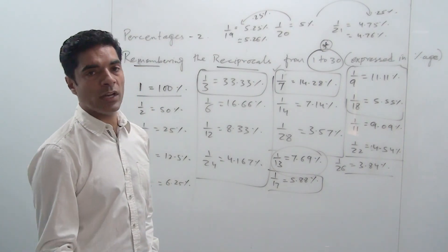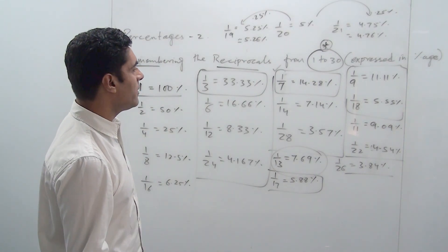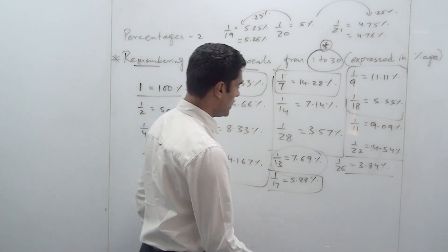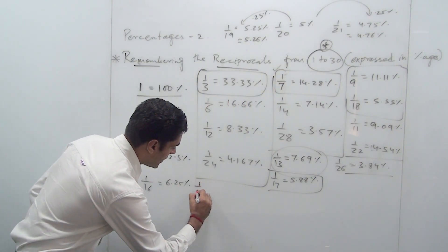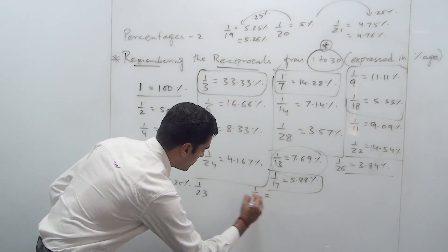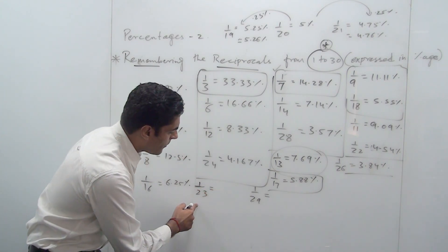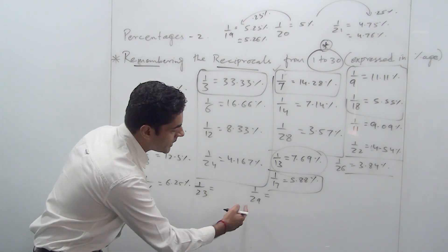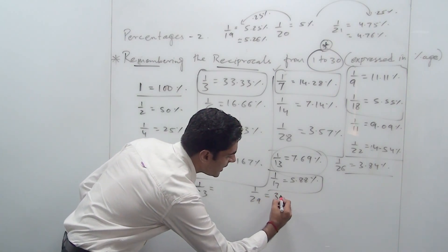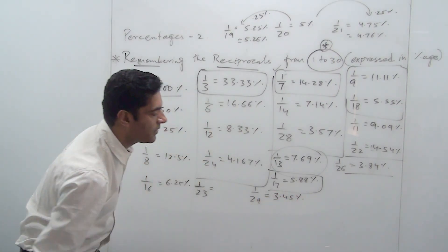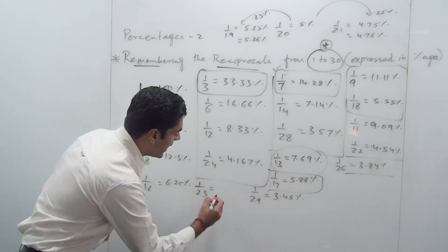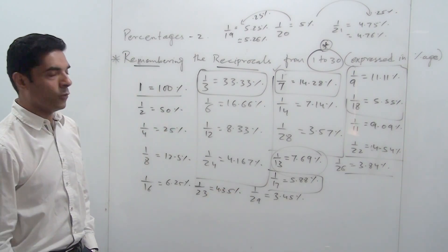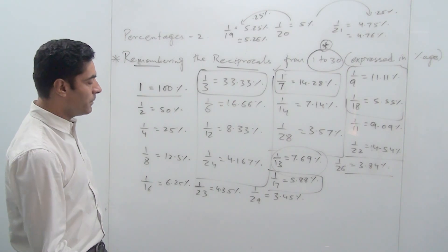We have reached 1/21. 1/22 we have already done from the 1/11 family, which is 4.54%. Then comes 1/23. Now 1/23 and 1/29 can be remembered together: 1/23 will be bigger and 1/29 smaller. 1/23 is 4.35% — the decimal comes after 4. And 1/29 is 3.45% — the decimal comes after 3. This is how you can remember these two numbers.